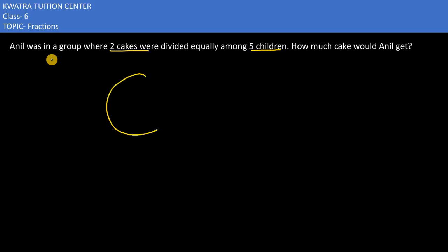So we can understand that there is a group and how many students are there? 5 students are there.